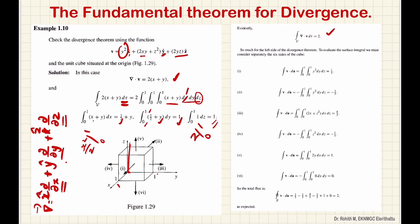Since there is a factor of 2 outside, we get 2 × 1 = 2. So the left-hand side, the volume integral of del·V, equals 2. Now we will calculate the right-hand side, the closed surface integral of V·dA, and verify the divergence theorem: ∫ del·V dτ should equal ∮ V·dA.